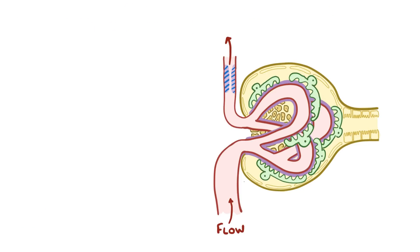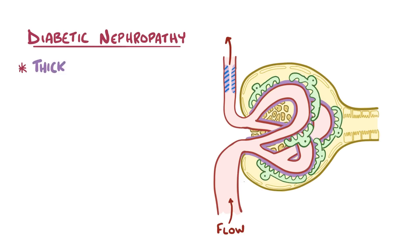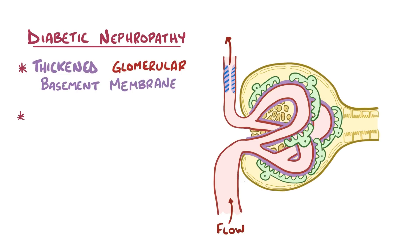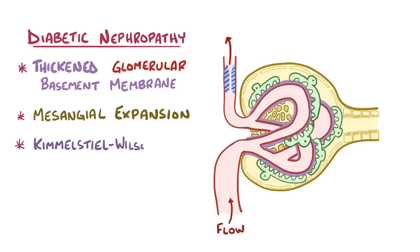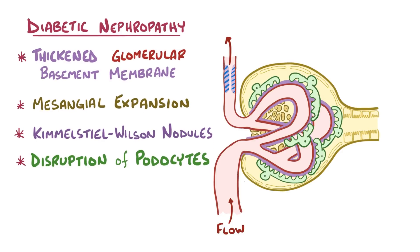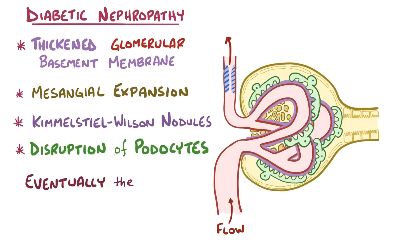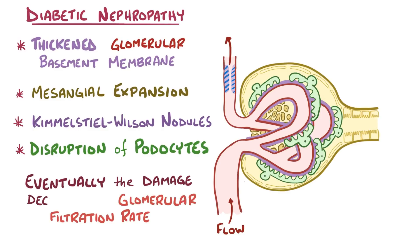The key abnormalities in diabetic nephropathy are a thickened glomerular basement membrane, mesangial expansion, Kimmelstiel-Wilson nodules, and disruption of the podocytes. Eventually these changes damage the glomerulus so much that it's unable to filter blood normally, and the glomerular filtration rate decreases.